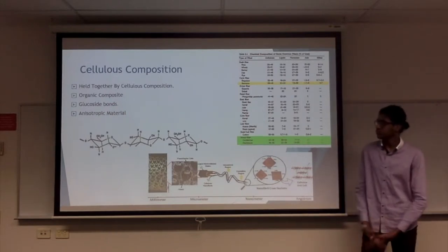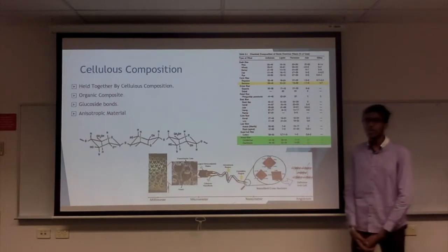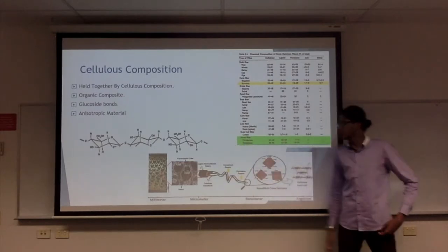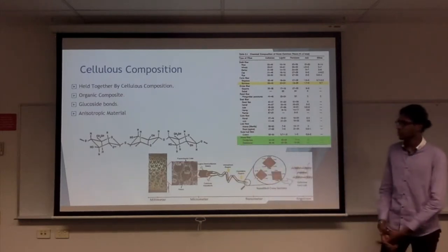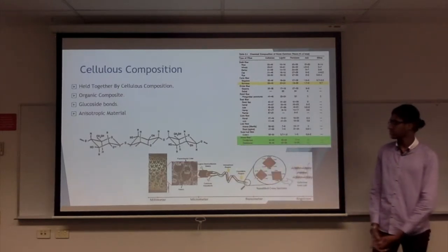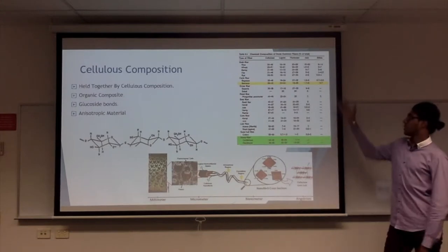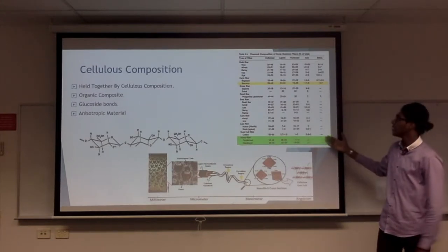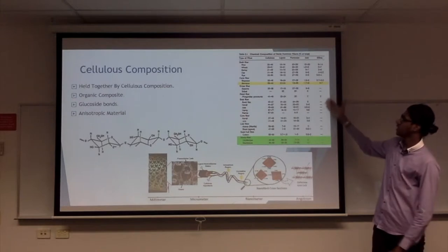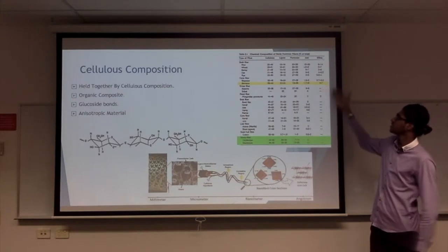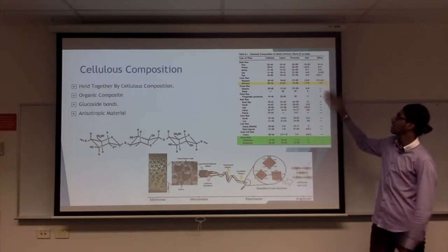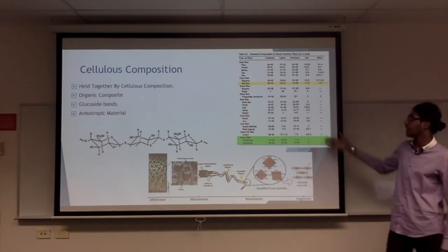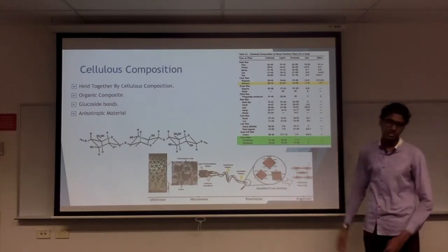Bamboo has a cellulose composition. It is also an organic composite material with a glucose bond, as shown in this image. It is also an anisotropic material, which means it changes its mechanical properties directionally. This table depicts bamboo's composition alongside its counterparts, with bamboo's materials identified in its compositions of cellulose, lignin, pentoses, ash, and silica.